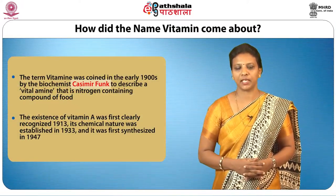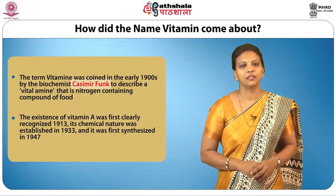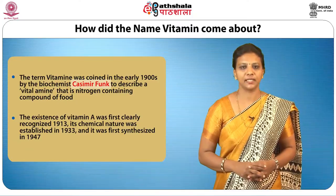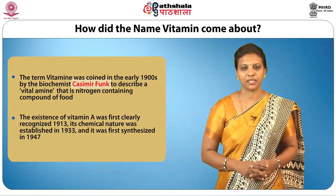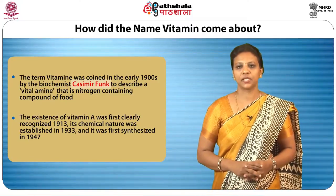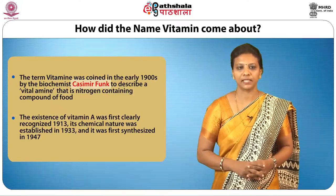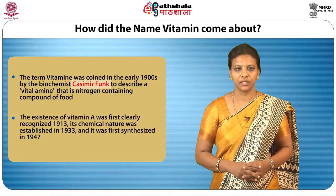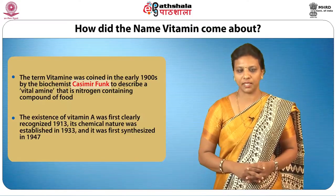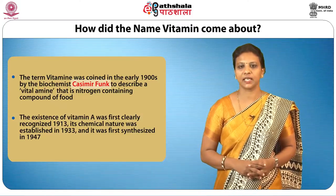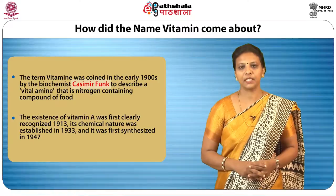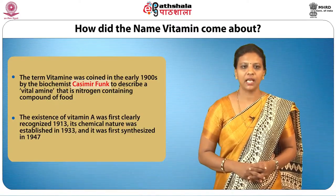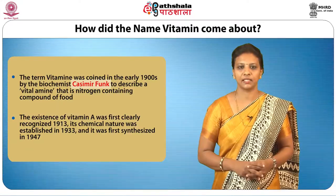How did the name vitamin come about? The term vitamin was coined in the early 1900s by the biochemist Casimir Funk to describe a vital amine, that is a nitrogen-containing compound of food. The existence of vitamin A was clearly recognized in 1913; its chemical nature was established in 1933 and it was first synthesized in 1947.